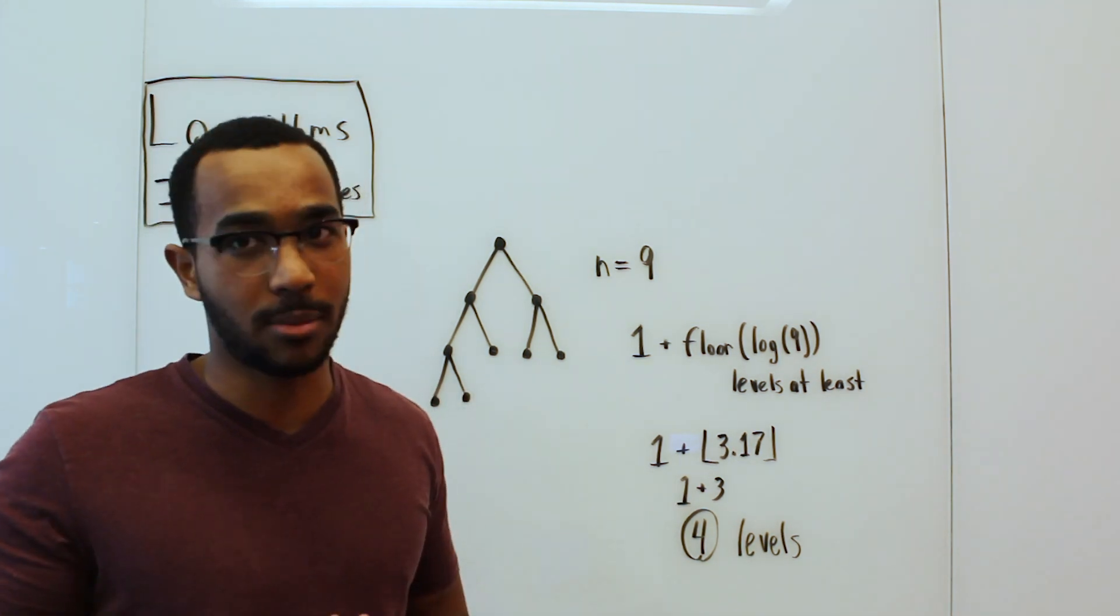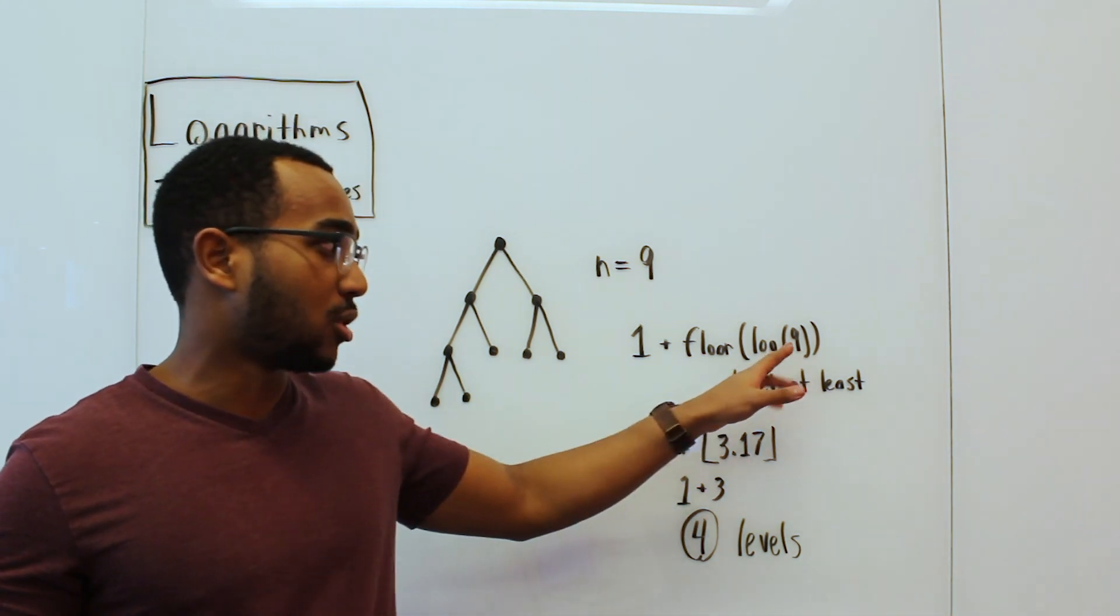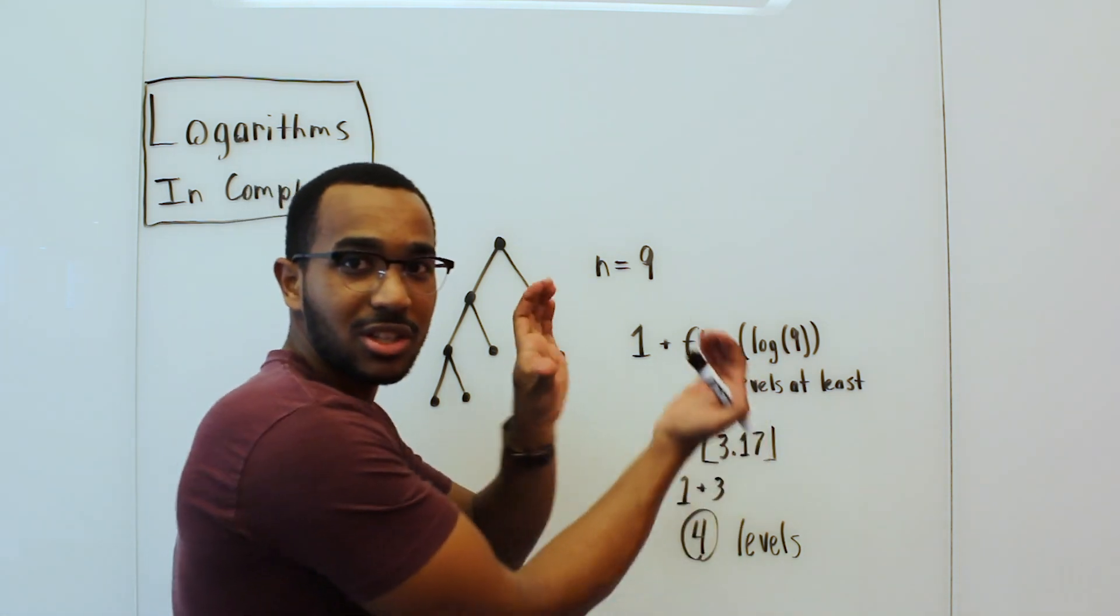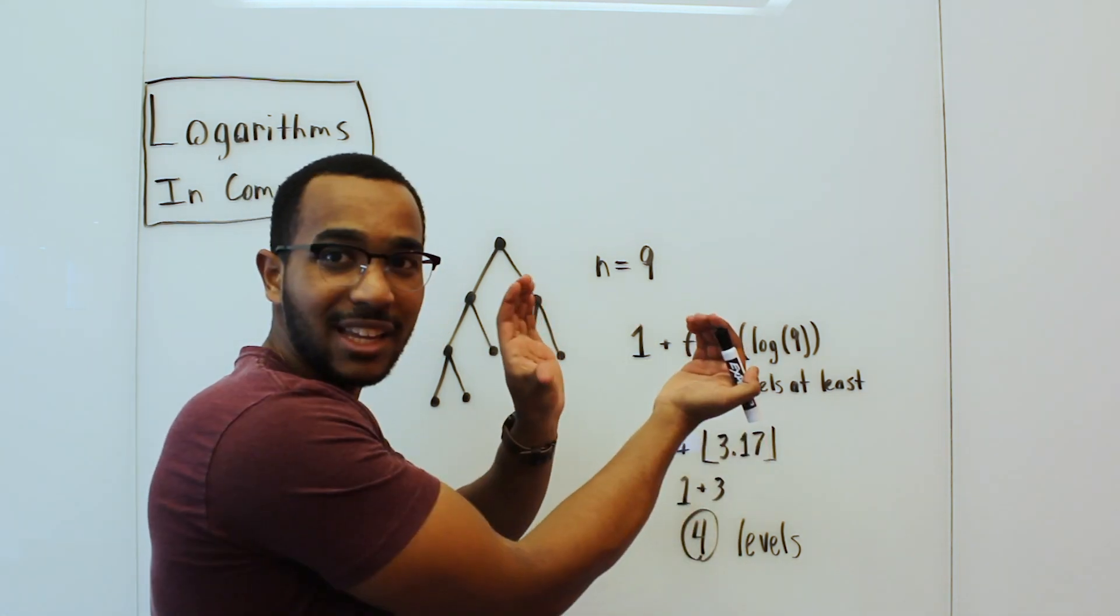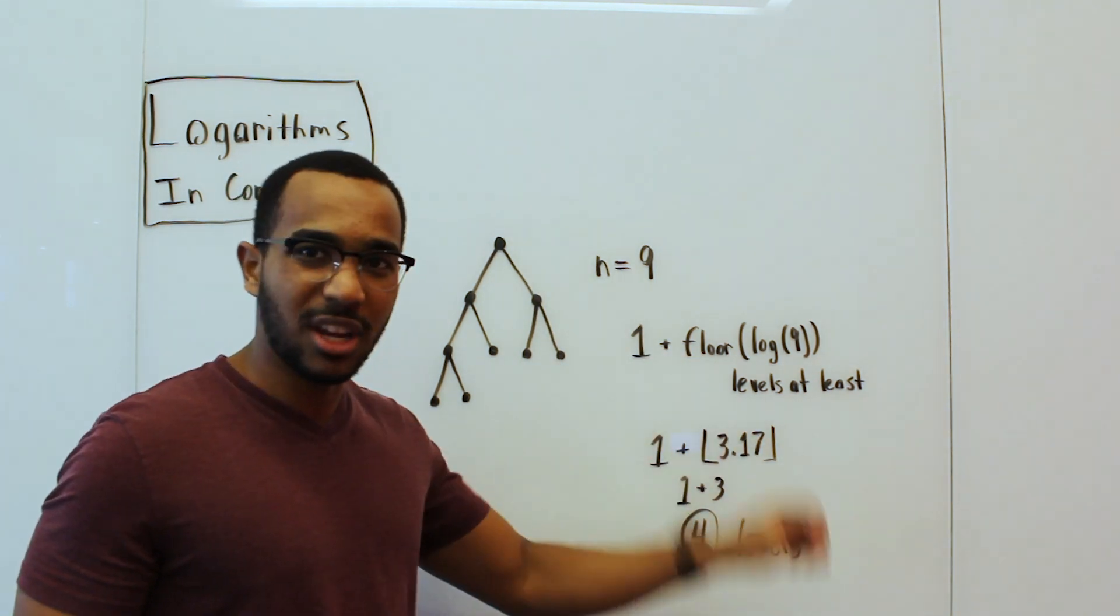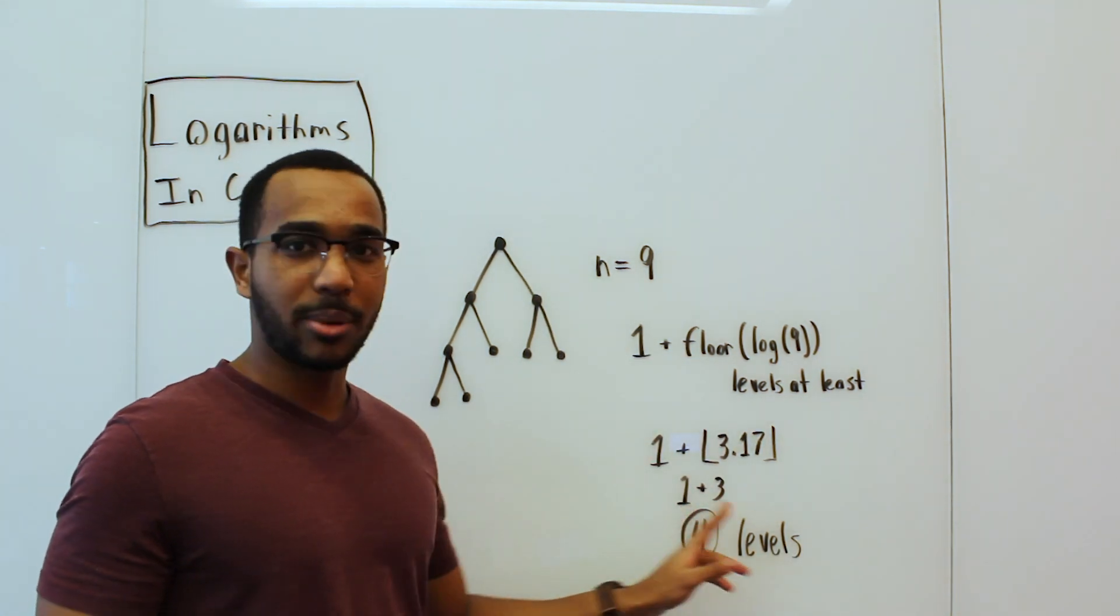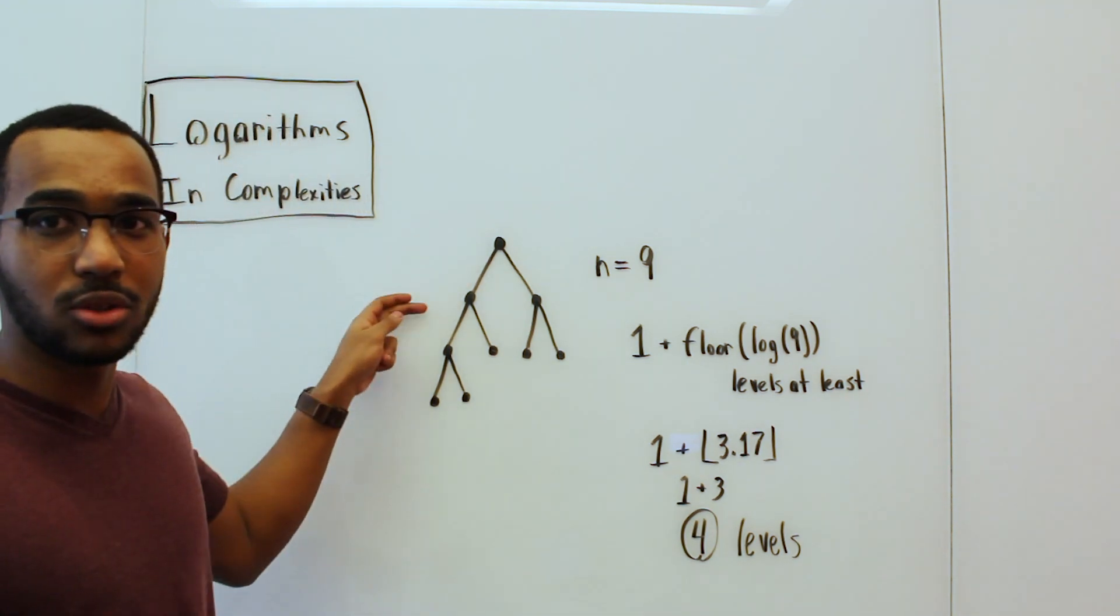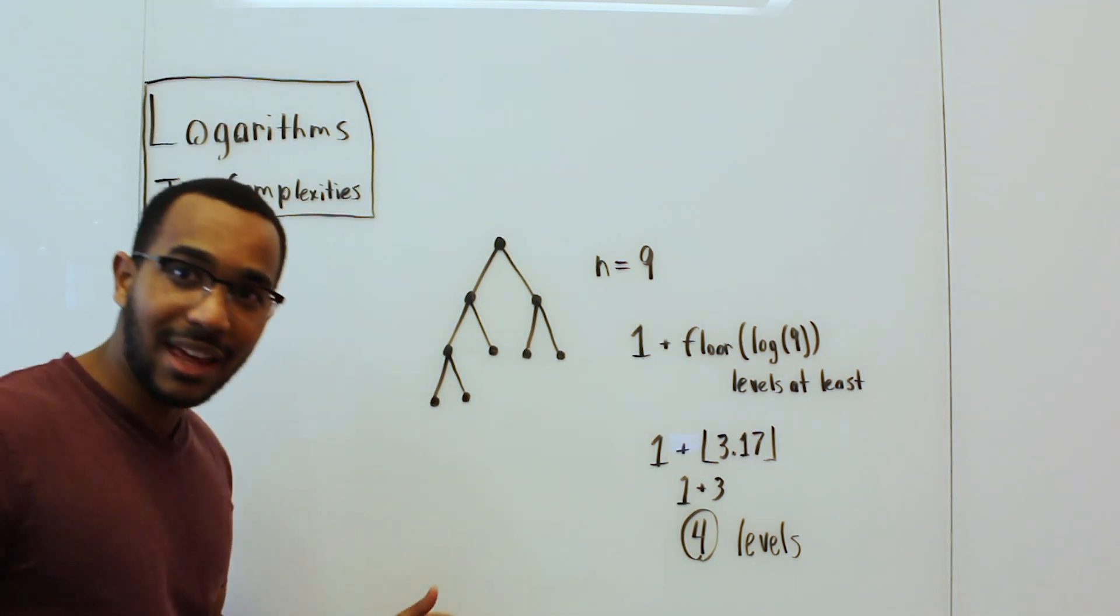We just assume it's going to be log base 2. The log base 2 of 9 is going to be 3.17. And these little brackets you see, those brackets are the floor symbol. It means we just truncate the decimal place. We're going to have 1 plus 3. So we have to have at least 4 levels. This is accurate. We have 1, 2, 3, 4, 4 levels.